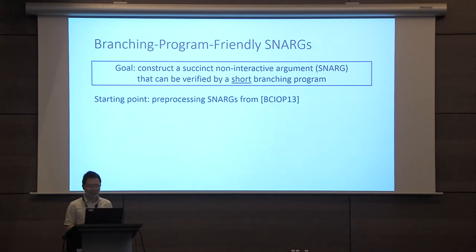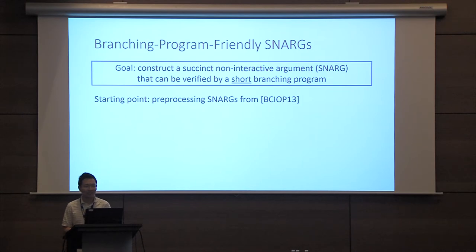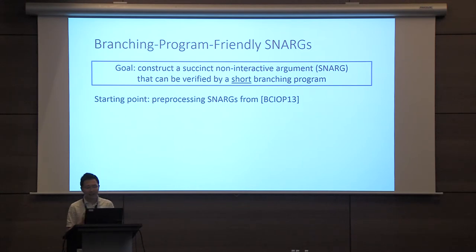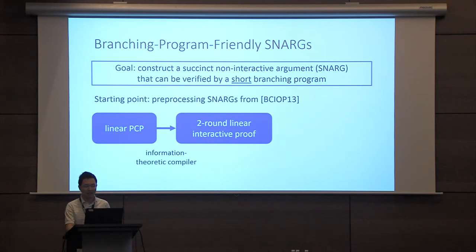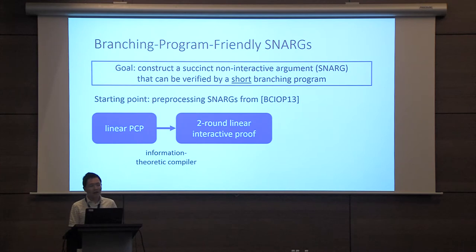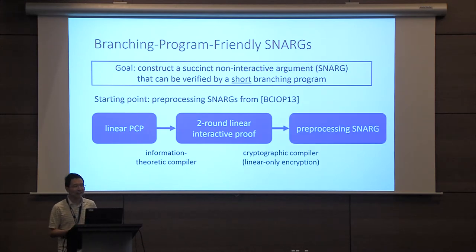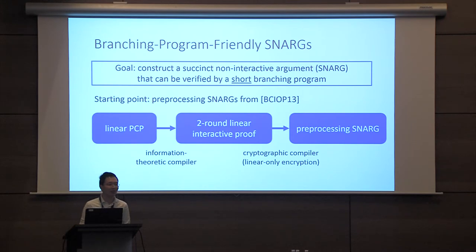Let me describe how our SNARK construction works. Our starting point for building these preprocessing SNARKs builds on a beautiful work by Bitansky, Chiesa, Ishai, Ostrowski, and Paneth. Their construction takes a two-step approach: first, they begin with an information-theoretic primitive called a linear PCP, and they compile that to a two-round linear interactive proof system. Then, on top of the two-round linear interactive proof, they provide a cryptographic compiler — namely linear-only encryption — that compiles it to a preprocessing SNARK.